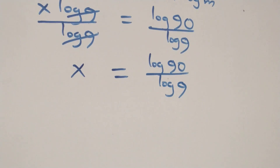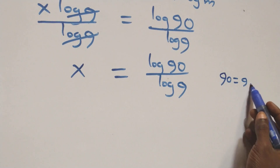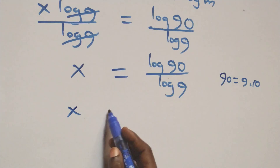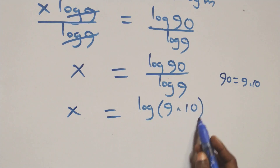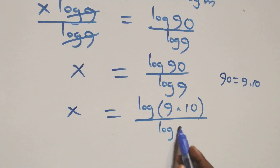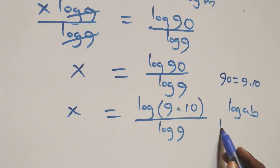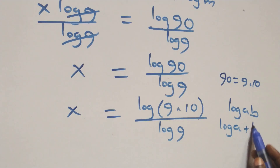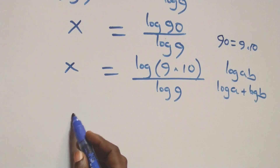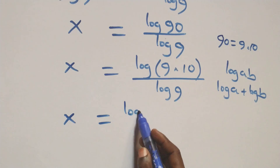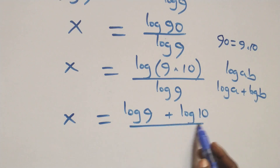From here we can write 90 as 9 times 10, so x equals log(9×10) over log(9). This follows the law of logarithms: log(a×b) can be written as log(a) plus log(b). So x equals log(9) plus log(10), all over log(9).